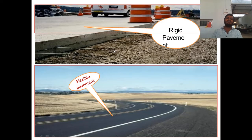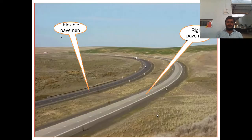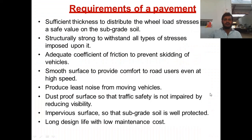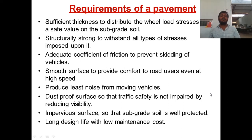Here you can see rigid pavement — concrete pavement — and flexible pavement — blacktop or bituminous or asphalt pavement — both shown in one picture. The requirements of pavement: the pavement should have sufficient thickness to distribute wheel load stresses to a safe value on the subgrade soil.